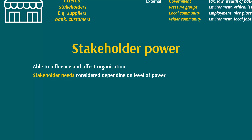The degree to which stakeholder needs are considered as part of the strategy-setting process depends on the level of power they have over the organization. It tends to be that the powerful groups' needs are tended to before the less powerful groups. For example, large customers that can buy an organization's goods in large quantities have significant power — if they decide to stop buying, the organization may have to reduce production and lay off staff.